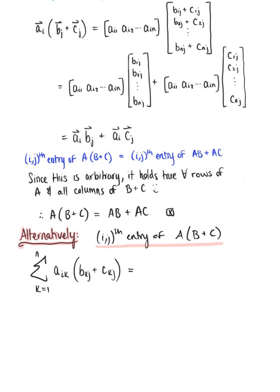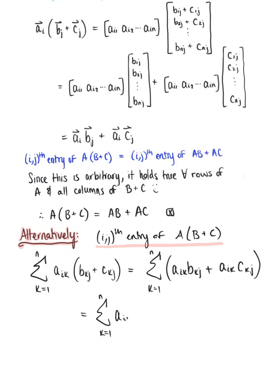By algebra, this is equivalent to the sum from k equals 1 to n of the i-th-row k-th-column entry of A times the k-th-row j-th-column entry of B, plus the i-th-row k-th-column entry of A times the k-th-row j-th-column entry of C. This further separates into the sum from k equals 1 to n of (A's i-k entry times B's k-j entry) plus the sum from k equals 1 to n of (A's i-k entry times C's k-j entry).